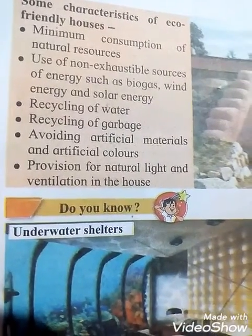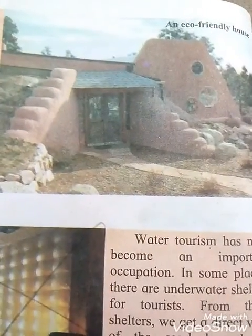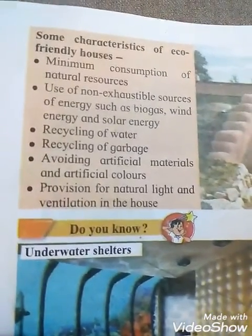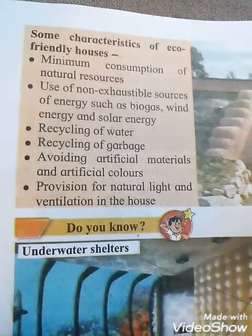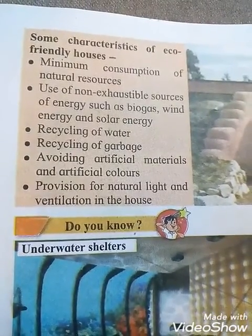The last characteristic is provisions for natural light and ventilation in the house. This picture shows an eco-friendly house. All these are the features or characteristics of eco-friendly houses.